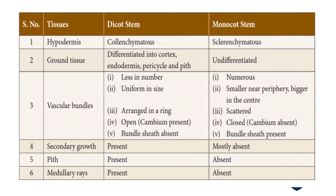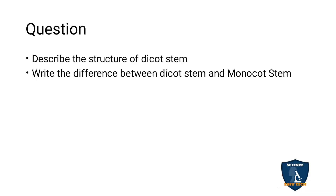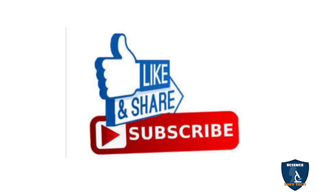This topic may be asked as a 5-mark or 7-mark question. Important questions include: describe the structure of dicot stem, and write the differences between dicot stem and monocot stem. Hope you understand the topic. Thank you for watching. If you have any doubts, post them in the comment box. Give a thumbs up, share, and subscribe to the Science Easy Tech channel.